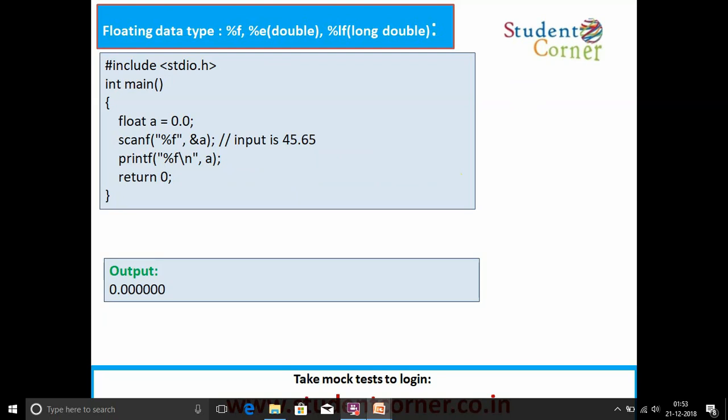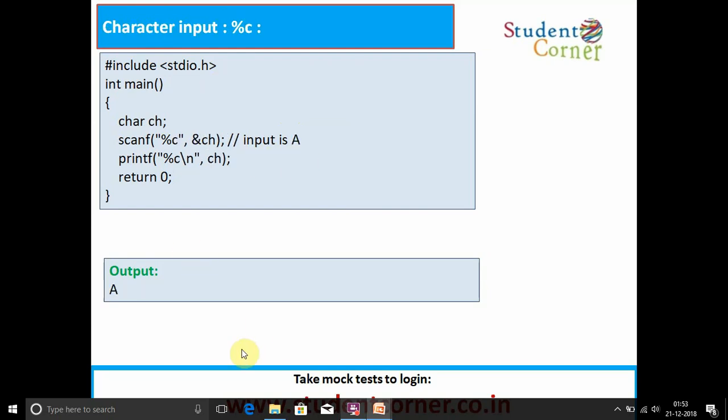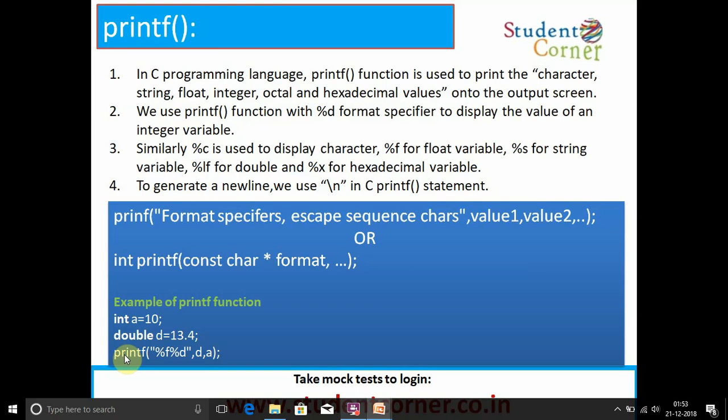Floating data point: percentage f, percentage e, percentage lf. Here we are taking an example of percentage f. Percentage f takes 6 decimal points. Percentage s string, we print the string value from stdio.h. Single character, we need to read the single character and print the single character in the program.